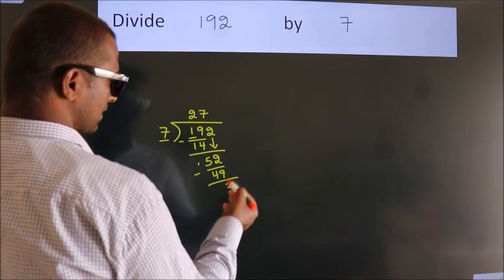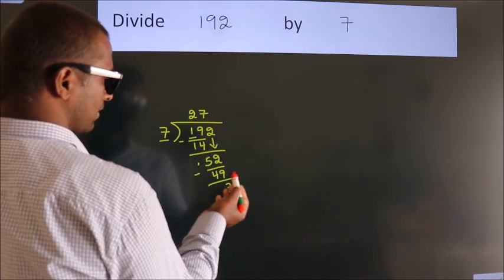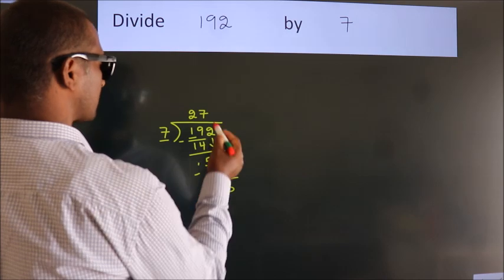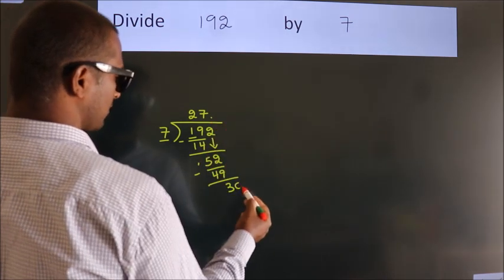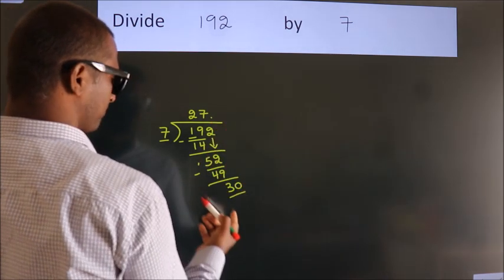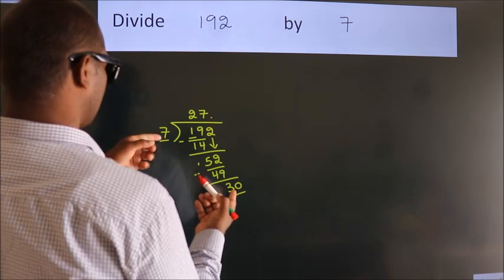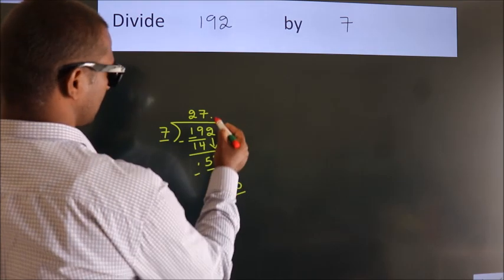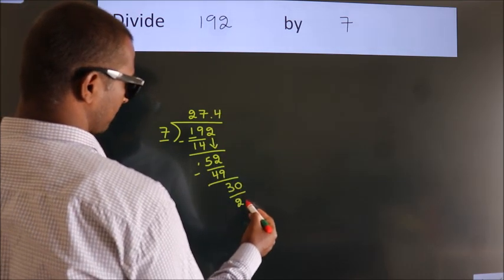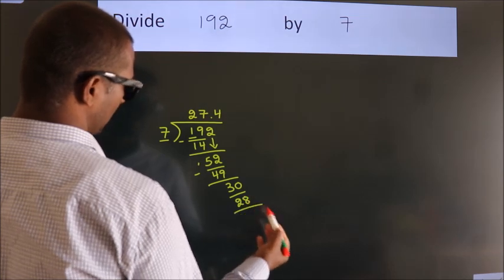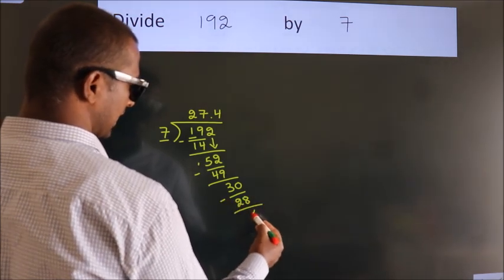After this, there are no more numbers to bring down. So what we do is put a dot and take 0, making 30. A number close to 30 in the 7 table is 7 fours 28. Now we subtract. We get 2.